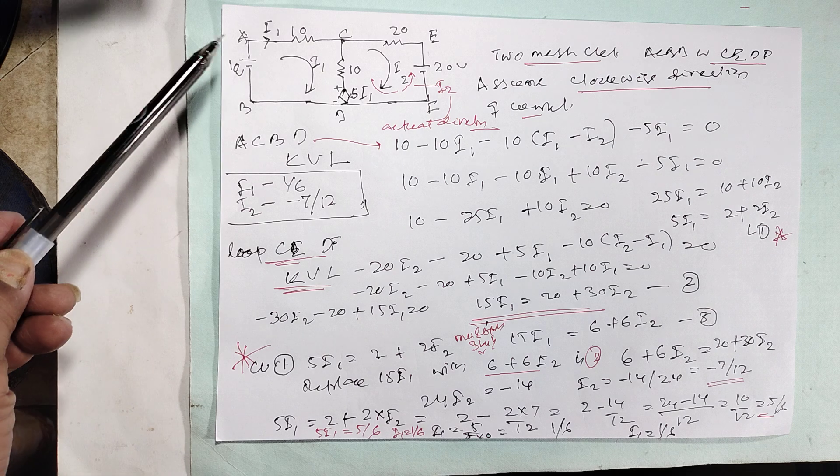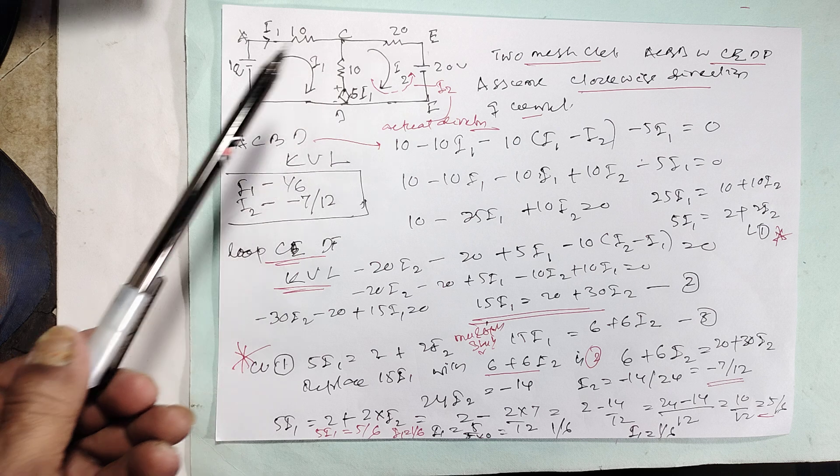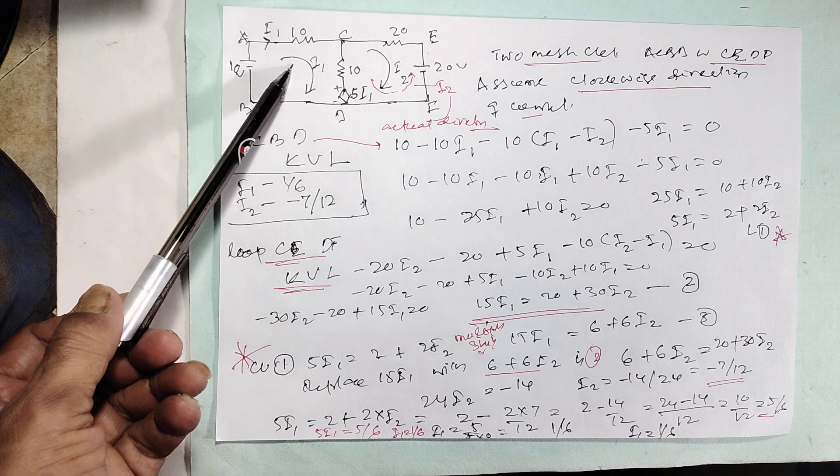In this circuit, you have to calculate what is I1 and I2. Two mesh circuits are there. You take one loop this, another loop this.